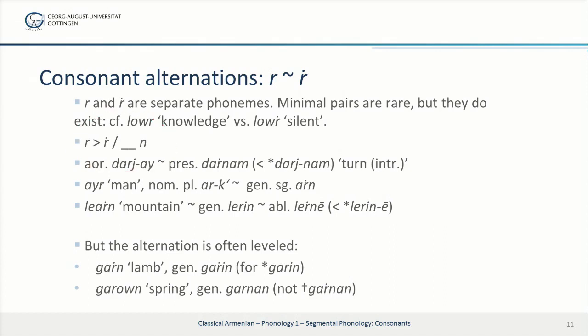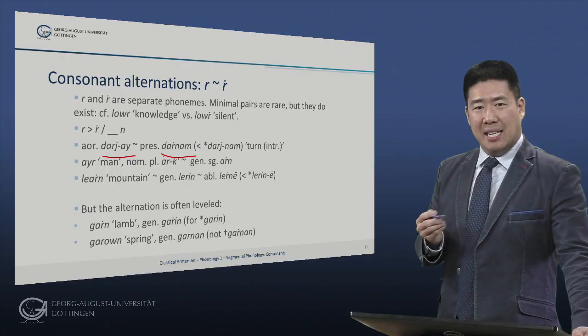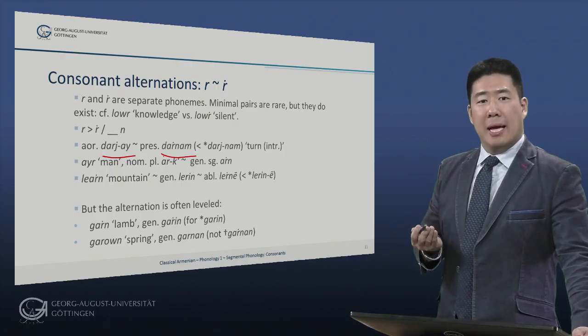So we see that, for example, in a verb such as aorist 'dardzai', meaning 'I turned' / 'turned around' (intransitive), but present 'darnam', where the R becomes R-dot before N.